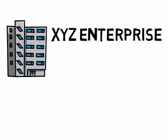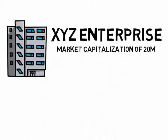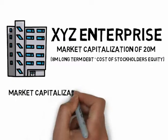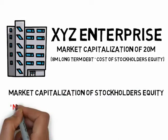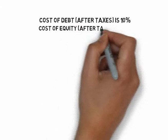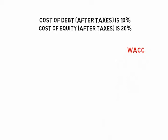Here is an example. XYZ Enterprise has a market capitalization of 20 million pesos, broken down into 8 million pesos long-term debt and 12 million pesos stockholders' equity. The market capitalization of stockholders' equity is derived by multiplying the number of equity shares by the market price per share. Assume that the cost of debt after taxes is 10% and the cost of equity is 20%, also after taxes.